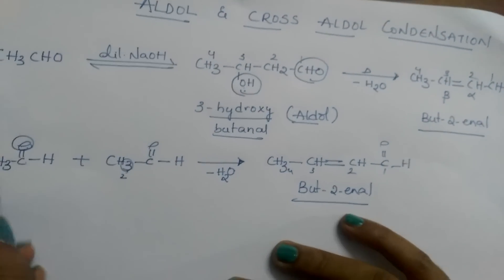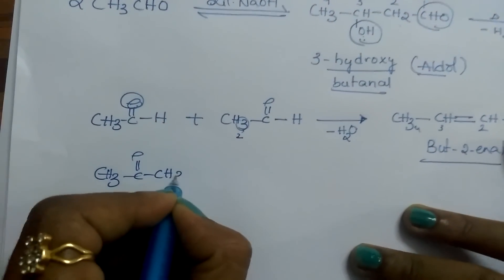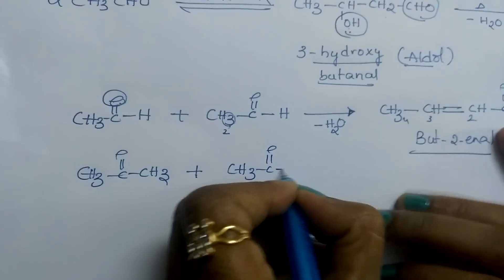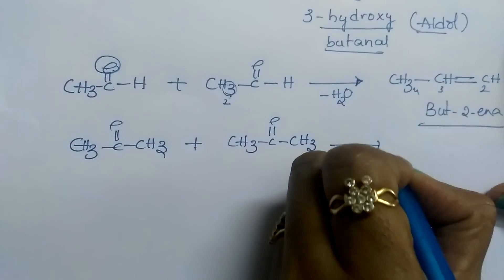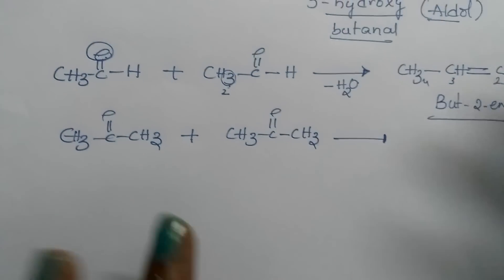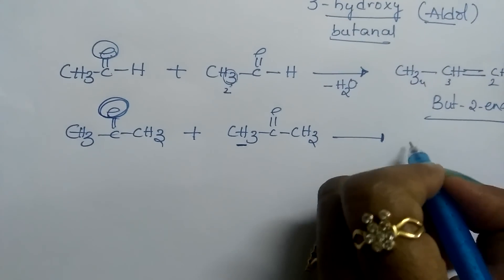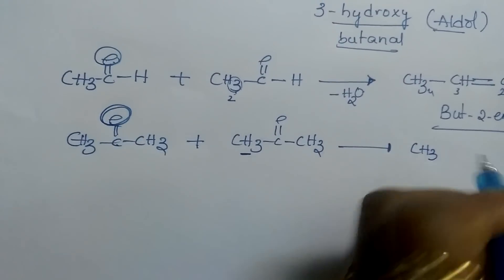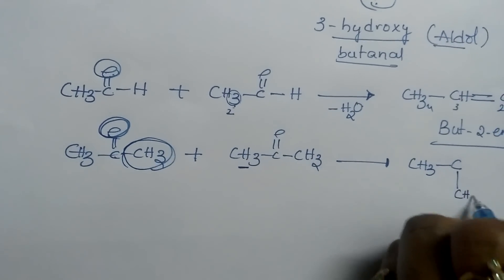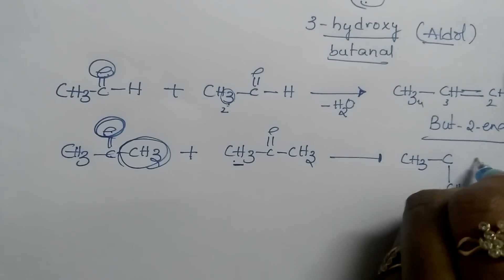Let us try to write another product. Acetone (CH3-C(=O)-CH3) is undergoing reaction in the presence of a base with another acetone molecule. How to write the product just by seeing the reactant? Remove this oxygen and remove these 2 hydrogens. Then you will get CH3, then C, with CH3 linked to this carbon.